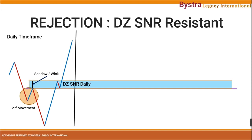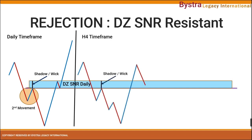Now let's move to the H4 time frame. The danger zone of the daily has already been marked. We only need to find the second movement. We have the second movement on the H4 time frame.